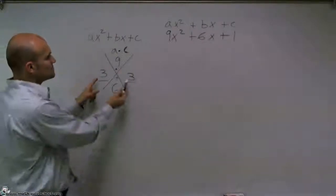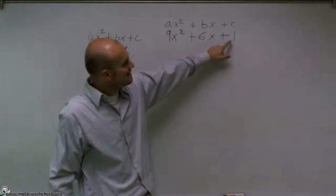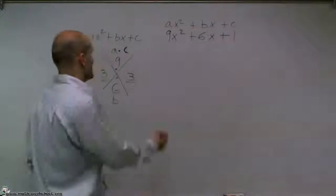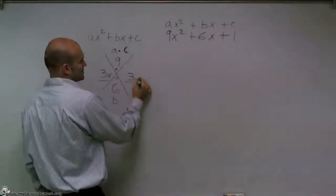Now remember, those two numbers have to multiply to give me my a times c. Well, since my c is going to be 1, here I can just have them as my 2x's. So it would be my 3x and my 3x.